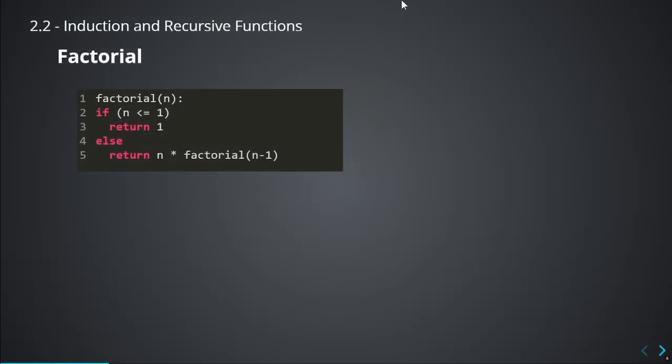We're going to start very simple and slow — we're going to start with the function to compute factorial, something you've done in first year. In fact, this is the same example I used in the previous video when I talked about proof by induction, which is a bit silly because it's just a definition of factorial. But if you want, you can look at the previous video and check out the similarities between proof by induction and what we're going to do now.